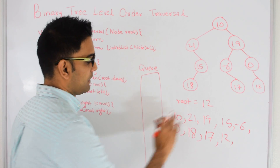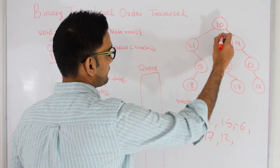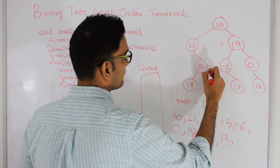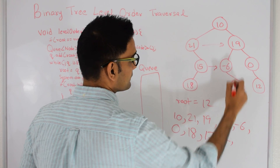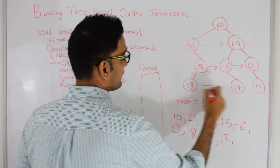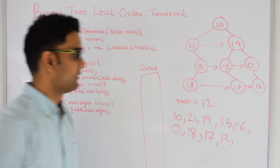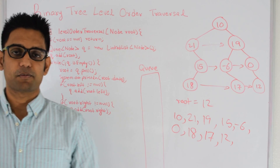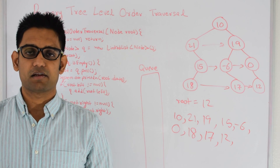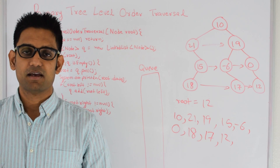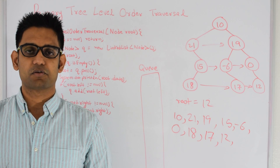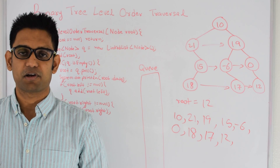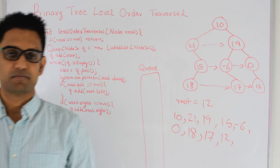So this is our level order traversal result: 10, 21, 19, 15, -6, 0, 18, 17, and 12. If you want the running code for this problem go to my GitHub at github.com/mission-peace/interview-wiki. And if you want to check out similar questions, go to my YouTube channel at youtube.com/user/tusharoy2525. Thanks for watching this video.